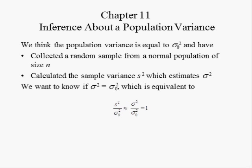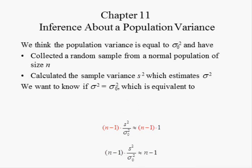Since the population variance, sigma-squared, is unknown, we use the sample variance S-squared to estimate it. Hence, we expect the ratio of S-squared and the hypothesized value of the population variance to be equal to one. Multiplying both sides of the equation by the sample size minus one yields this equation. Since the sample size minus one times one equals the sample size minus one, the right-hand side simplifies to n minus one.